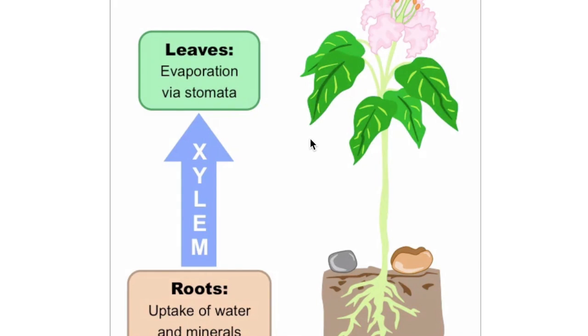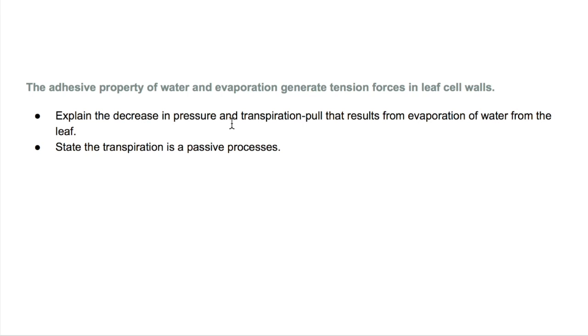When water leaves the leaves, it brings on all the other water molecules. Why? Because of adhesion and cohesion. The water molecules are attached to each other, so if one molecule goes up, the rest will follow. We said why there's a decrease in pressure and what is the transpiration pull. And we also need to know that transpiration is a passive process. It doesn't require energy.